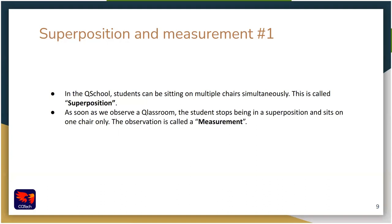So far we've seen two things. First, in the Q School, students can be sitting on multiple chairs simultaneously — formally this is called superposition. We also saw that as soon as we observe the classroom, the student stops being in superposition and sits on one chair only. The act of observation is called a measurement. In the quantum world, when we observe, we say that we made a measurement.